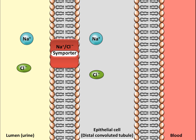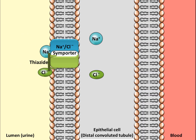In the distal convoluted tubule, or the DCT in the nephron, thiazide diuretics act by blocking the sodium chloride symporter by binding to the chloride binding site. This ultimately stops the sodium and chloride reabsorption from the lumen, or the filtrate, into the epithelial cells of the DCT.